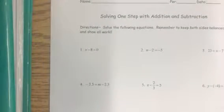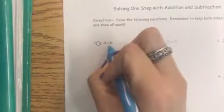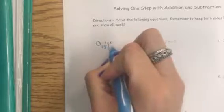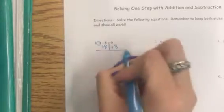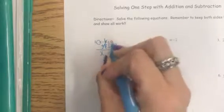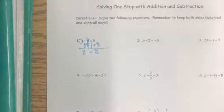Okay so let's check the answers and see how you did. For number one, our variable is x which means we want to undo subtracting eight and we will do that by adding eight. So our eights cancel, zero plus eight is eight, so we get an answer of x equals eight.